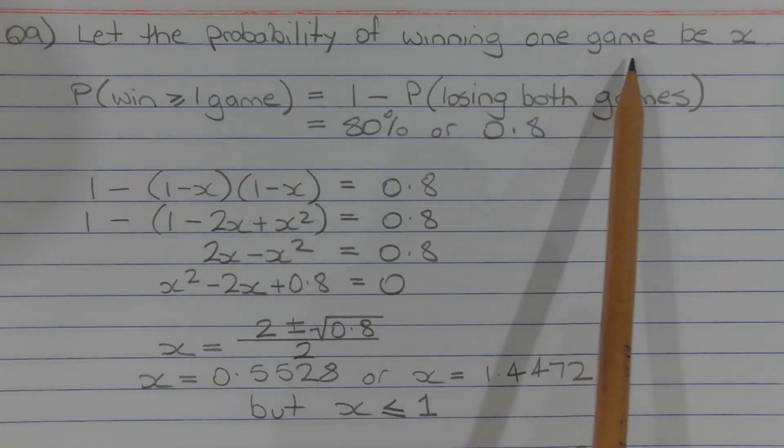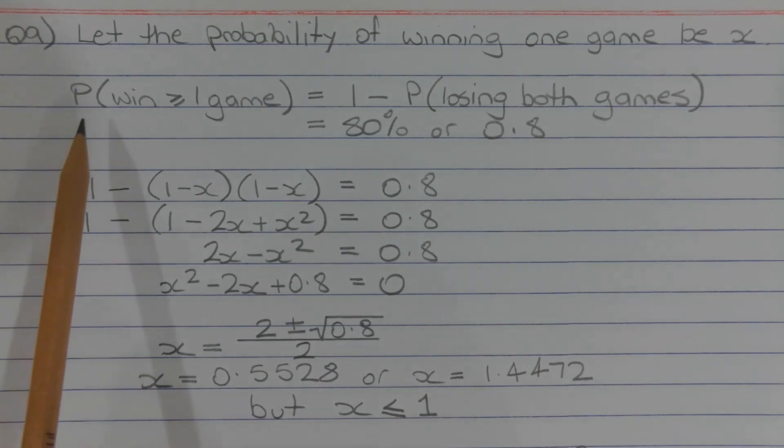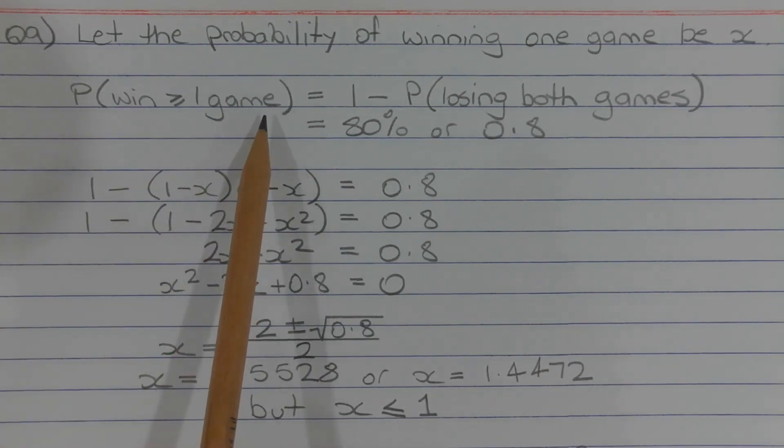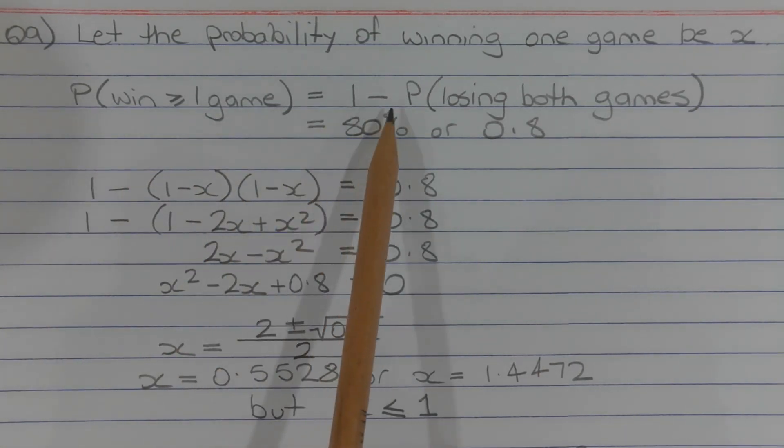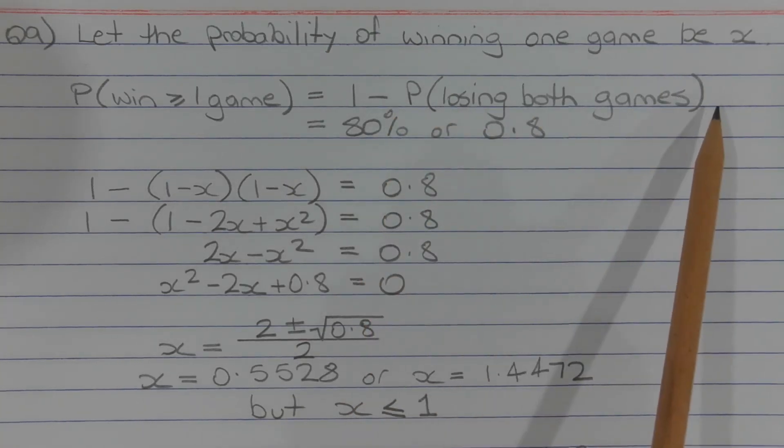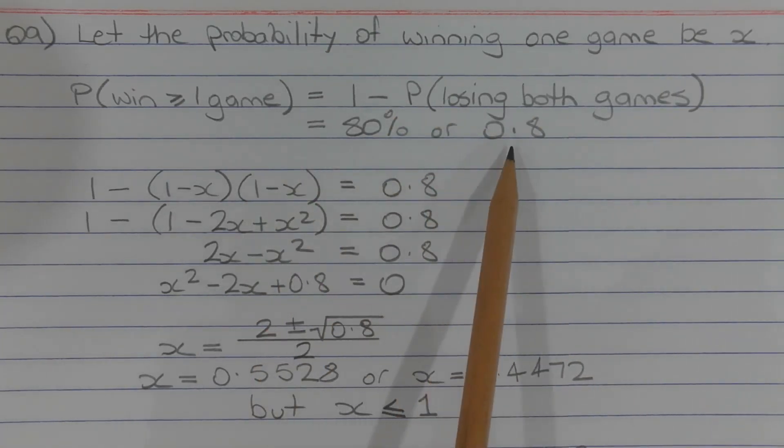Let the probability of winning one game be x. The probability of winning at least one game by the law of complements is equal to 1 minus the probability of losing both games, which equals 80% or 0.8.